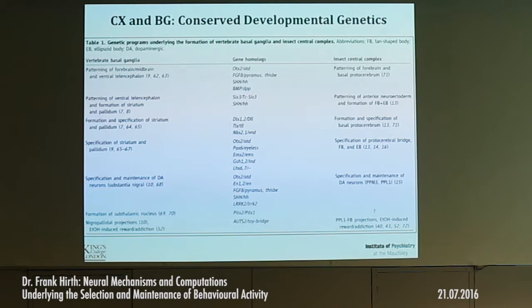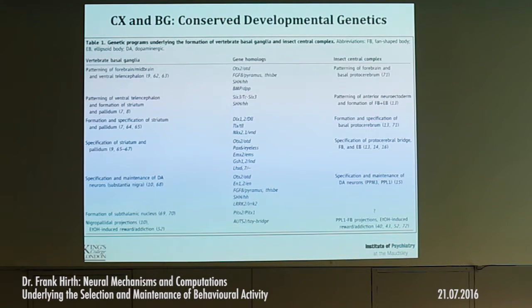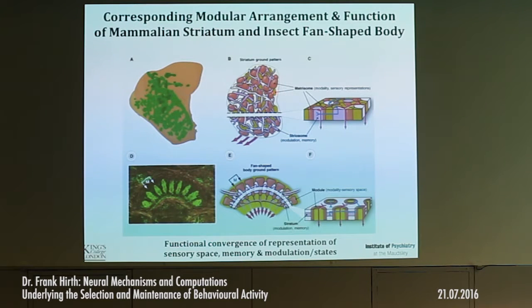Similarly, we were the first to show that in Drosophila, if you lose this gene, your anterior part of the brain is gone. This same group of genes is later used to specify the striatum and the pallidum, which are parts of the basal ganglia, but also parts of the central complex. There is another interesting case: a gene called Autism 2 found by colleagues at the Institute of Psychiatry, which segregates with autism cases. Its Drosophila homolog is involved in ethanol-induced reward. We also have a corresponding modular arrangement and functional convergence of sensory space representation in the striatum and the fan-shaped body.